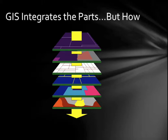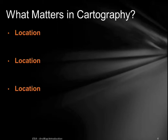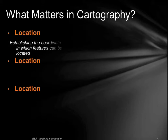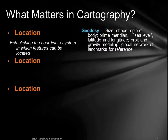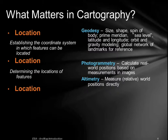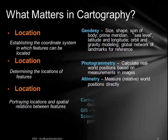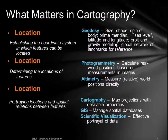Obviously there's no talk without the GIS layer figure. GIS integrates the parts, but how? In terms of geocartography, we have location. We need geodesy — the size and shape of the body — prime meridian, sea level, latitude, longitude, or if you're doing astronomy, RA and DEC. You also need photometry, altimetry, topography, and then cartography, and finally GIS. GIS doesn't exist without standing on top of these other sciences, and of course GIS is also scientific visualization.